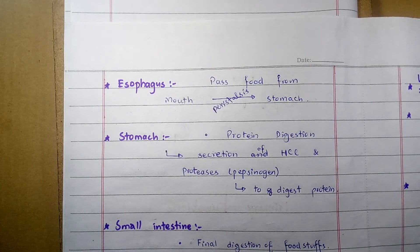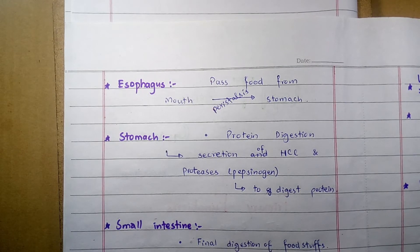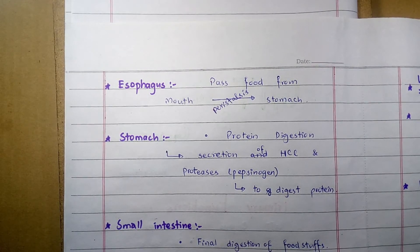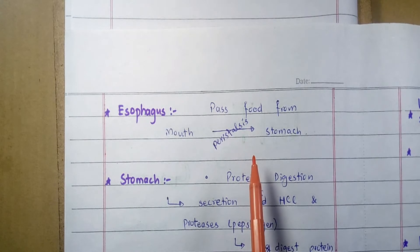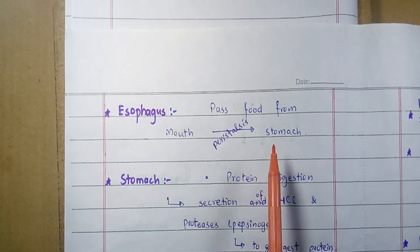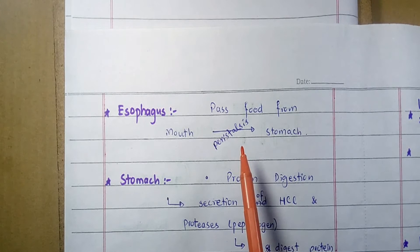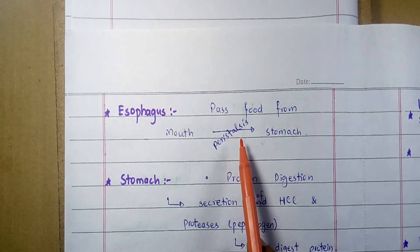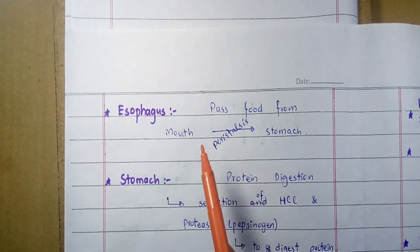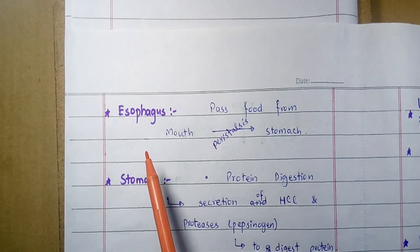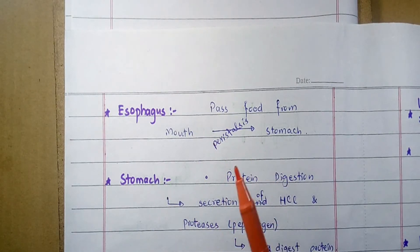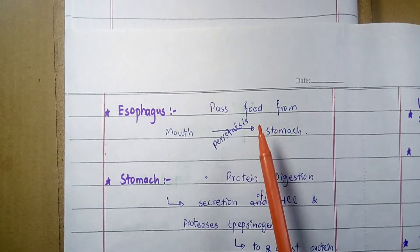Moving toward the esophagus: the esophagus is a muscular tube-like organ that receives food from the mouth and sends it toward the stomach by a series of muscular contractions called peristalsis. So the esophagus is responsible for the passage of food from the mouth to the stomach.